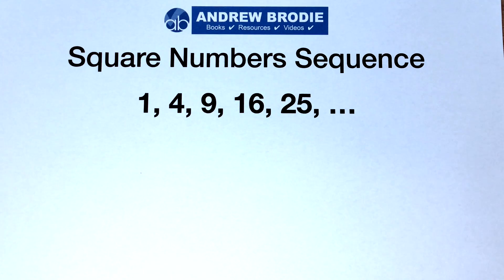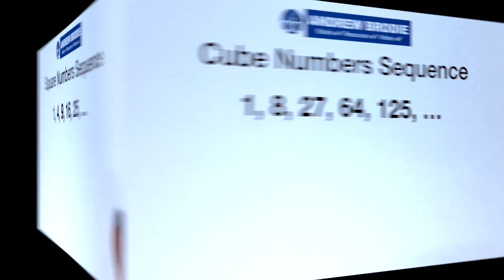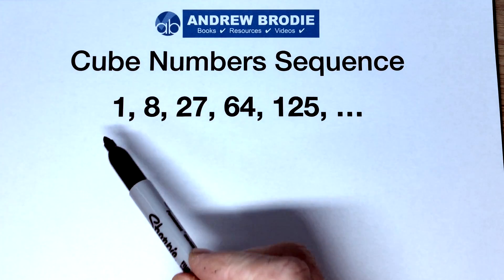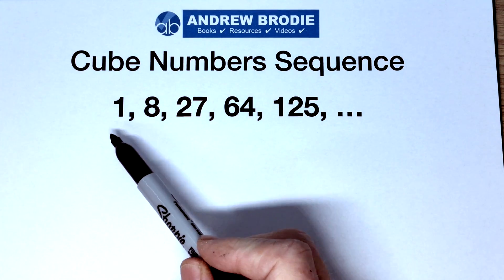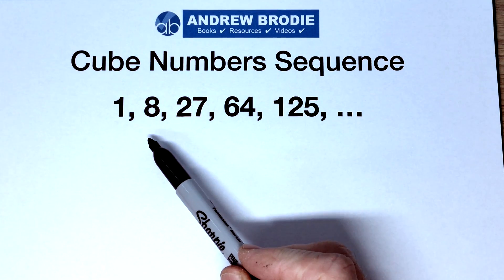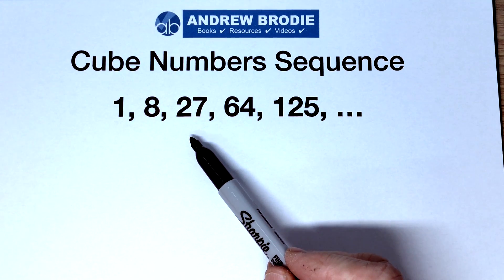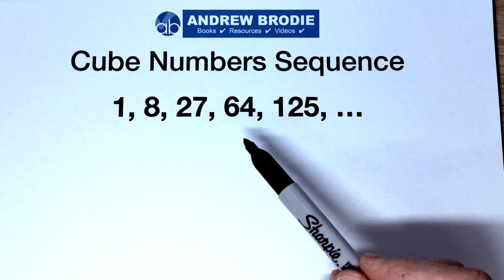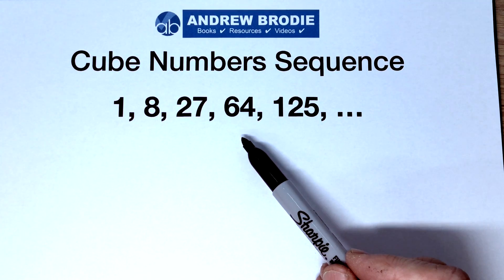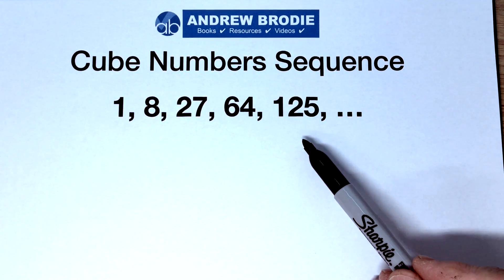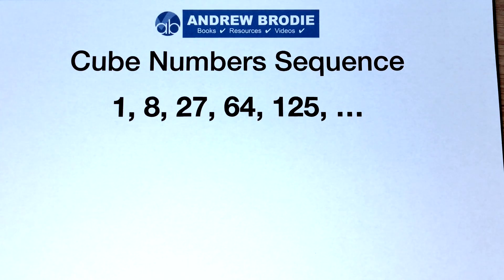This is the cube numbers sequence. 1 cubed is 1, 2 cubed is 8, 3 cubed is 27, 4 cubed is 64, 5 cubed is 125.